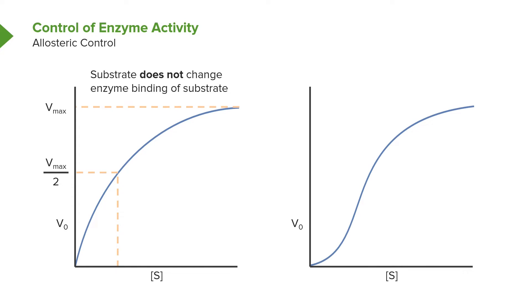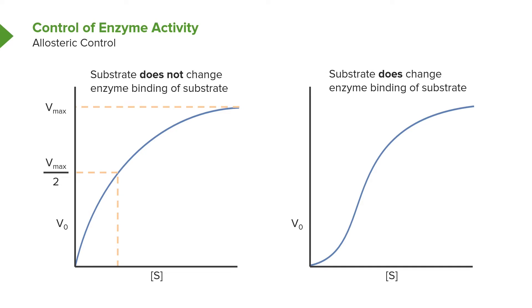In the first scenario, the substrate does not change the enzyme — the enzyme grabs the substrate and catalyzes the reaction on it. However, in the second scenario, the substrate, as a result of interacting with the enzyme, changes the way the enzyme binds to substrate. So if that enzyme is a multi-subunit enzyme, as many enzymes are, then the binding of the first substrate can affect the binding of subsequent substrates, which is why this curve deviates from the hyperbolic curve.